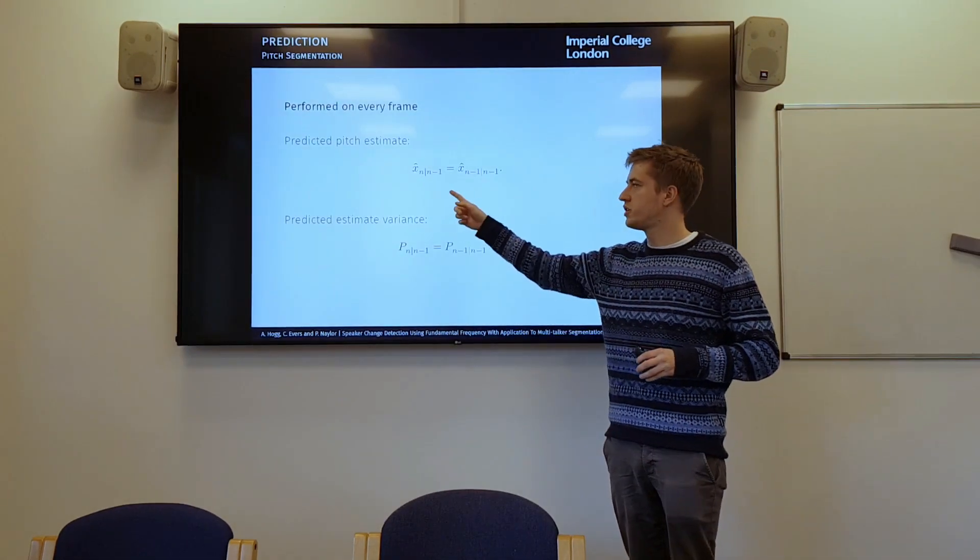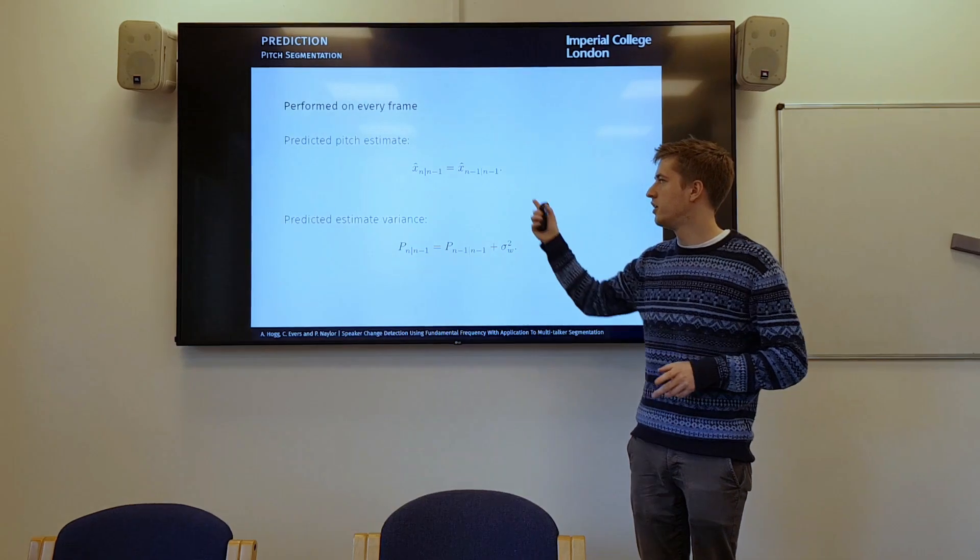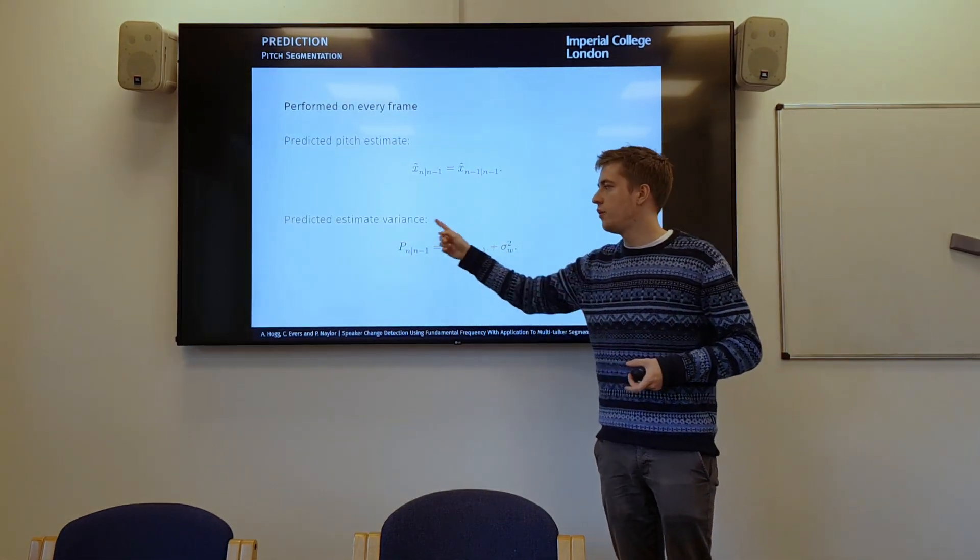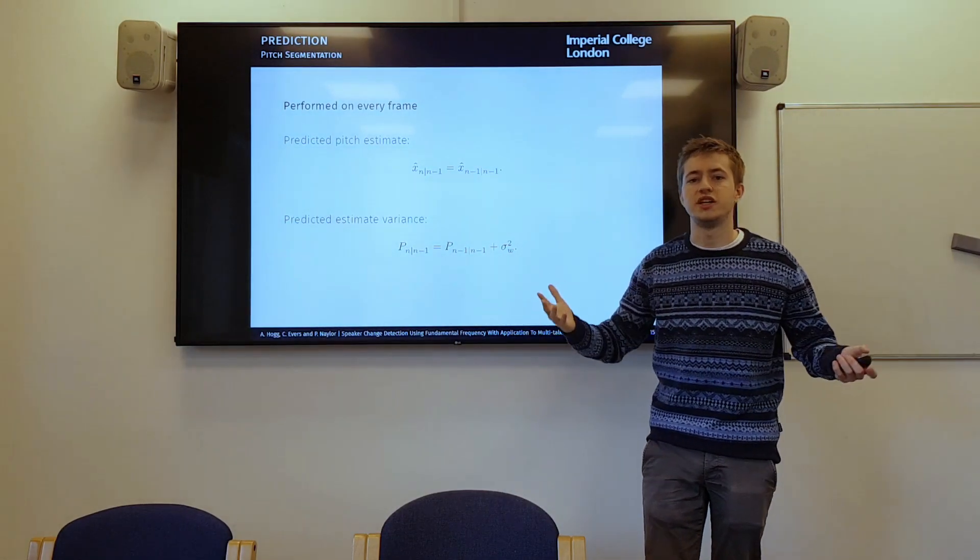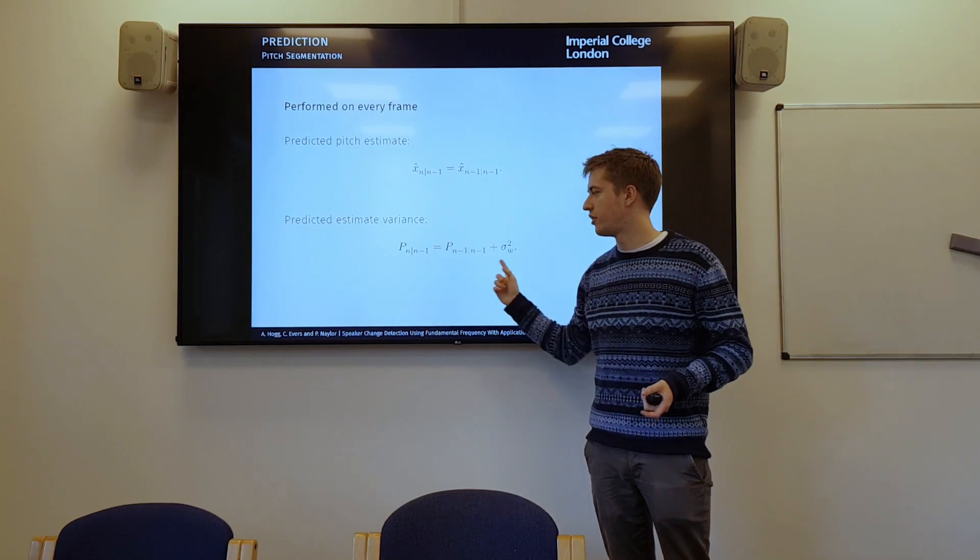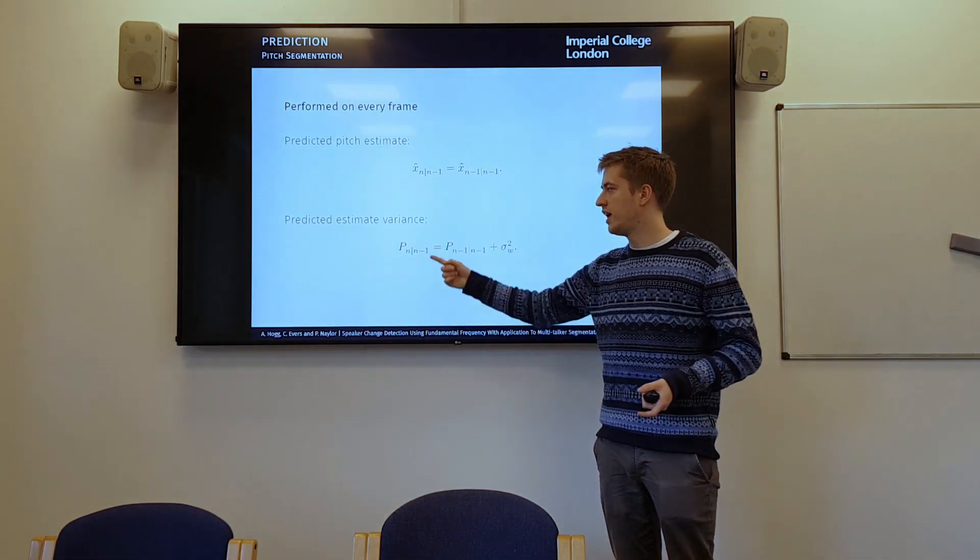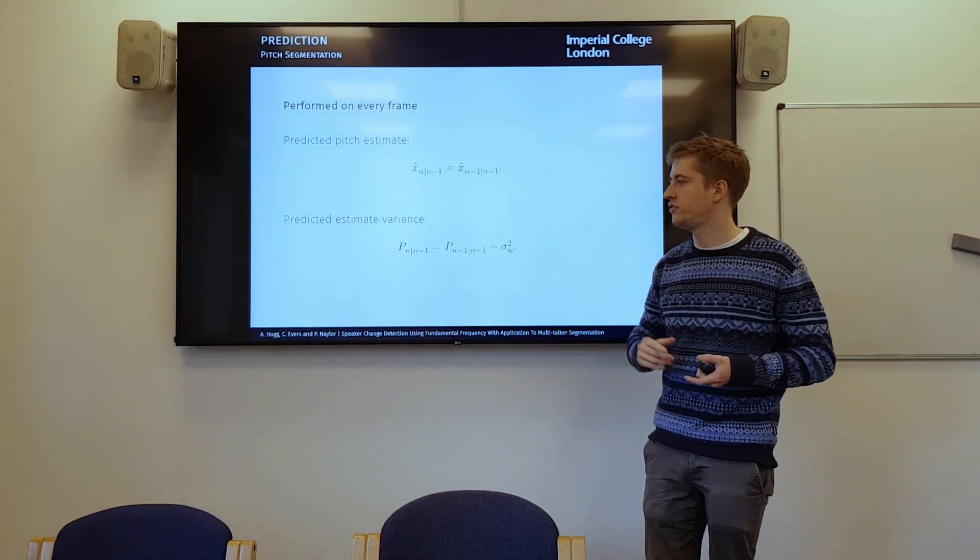So how does this prediction work? Well, the prediction just assumes that the pitch of the current frame is the same as the previous frame, because obviously between frames you wouldn't expect the pitch to vary too much. And then we want a way of modelling how accurate our prediction is, which is what this variance models. And obviously if we're just doing this prediction step, at every consecutive frame this error gets worse and worse, just keeps linearly increasing.